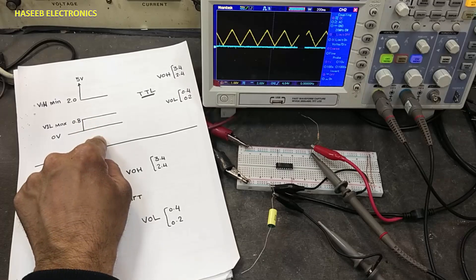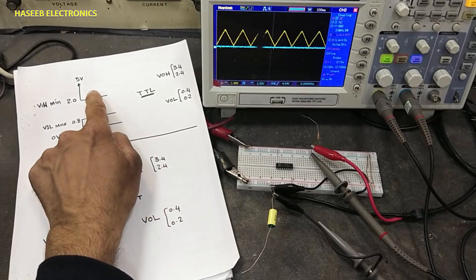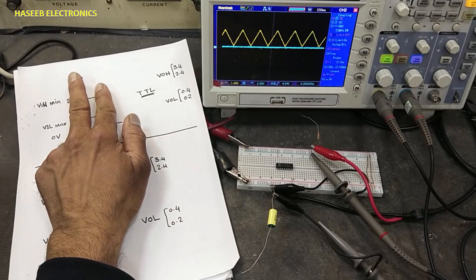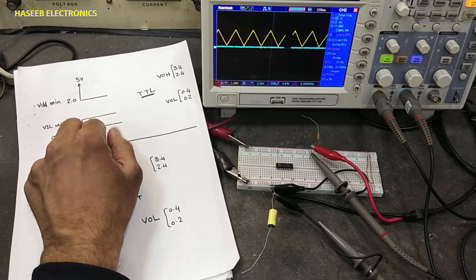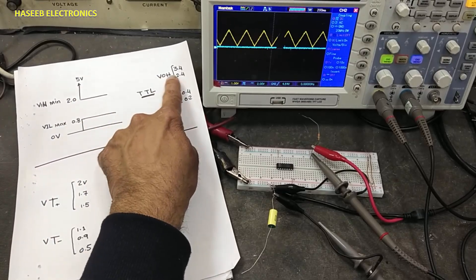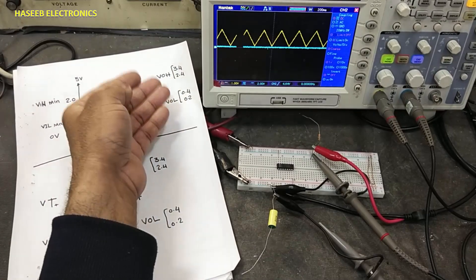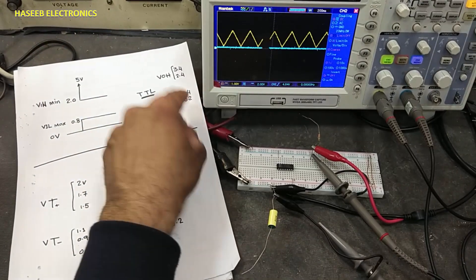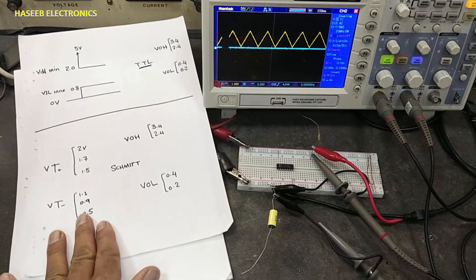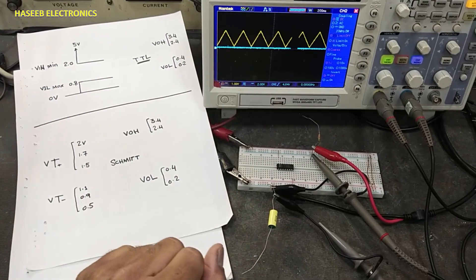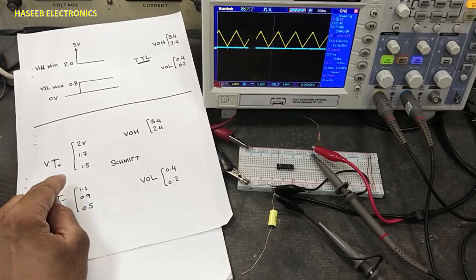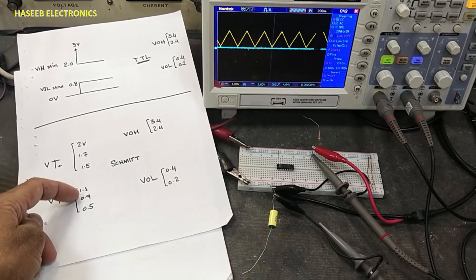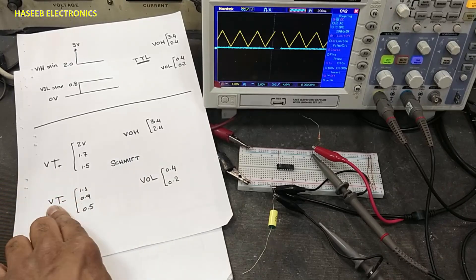This is the TTL input logic level. Output logic: VOH is 2.4 volts and above for logic high, logic low output is 0.4 volts and down. But in Schmidt trigger, 1.1 volts and below is low level trigger, equivalent to logic low.